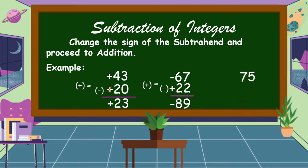Another example: 75 minus 8. 8 is positive, so we change it to negative, and subtraction becomes addition. So, 75 plus negative 8 — they have different signs, so we subtract. 75 minus 8 is equal to 67.